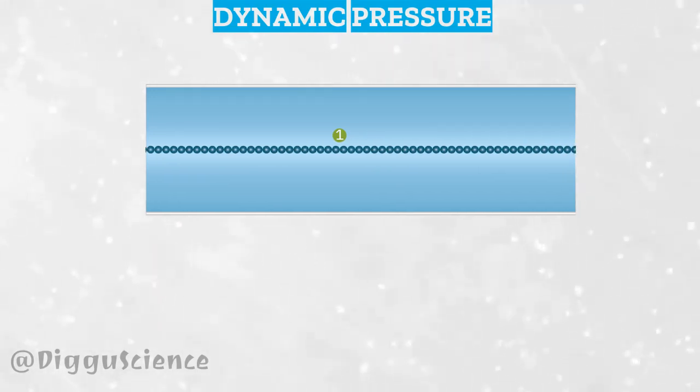Now the fluid starts to flow. The particle at point 1 now has a certain speed. V1 is the same as V. Well, the dynamic pressure at this point is P1 equals half rho V squared.